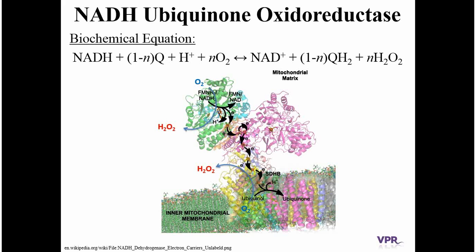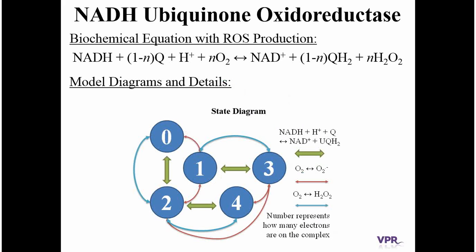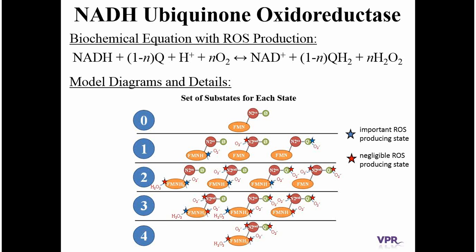To answer these questions regarding ROS production in Complex 1, we can construct a model that includes all the necessary biophysical and biochemical details so that we can faithfully simulate the enzyme kinetics and ROS production kinetics. To do that, we construct what's called a state diagram, shown below, where the large circles represent various states of the enzyme. The numbers represent electrons on the complex that come from either NADH or QH2 if the reaction is running in reverse, and the arrows represent various pathways to and from each state. Importantly, we characterize these states as a set of substates — states that characterize the likely position of electrons on the complex.